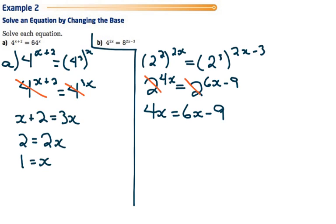Isolate x, I'll move the 6x to the left, subtract it. We have negative 2x equals negative 9. Divide by negative 2. We'll leave it as a fraction. x equals 9 over 2.